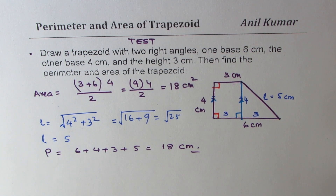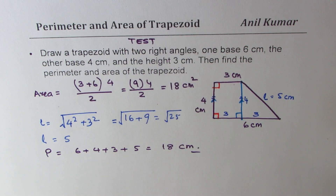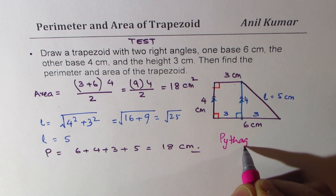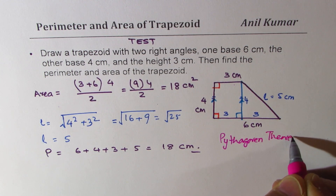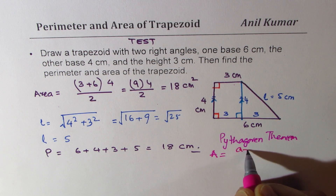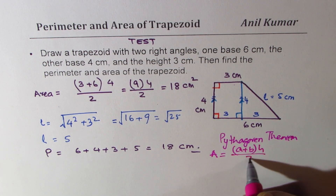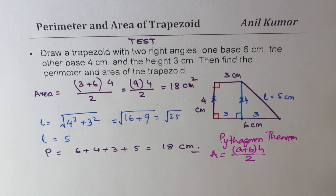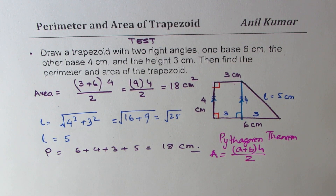Interestingly, the area and perimeter have the same numerical value in this particular case. What we learned in this series is that to find area and perimeter of a trapezoid, we might need to use the Pythagorean theorem. Remember the area formula: (a plus b) times height divided by 2. That is what you need to solve any question based on perimeter and area of a trapezoid. I hope this exercise helps you. Thanks for watching — feel free to comment, share your views, and share my videos with your friends. Thank you and all the best.